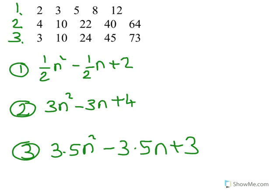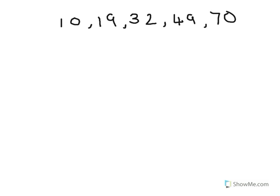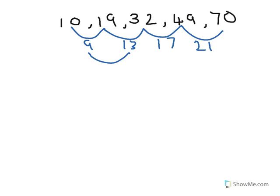Last one for you to have a go at. Let's look at this one together. From 10 to 19 we've added 9; 19 to 32, we've added 13; 32 to 49, we've added 17; 49 to 70, we've added 21. Let's look at the second difference — each of these second differences add 4, add 4, add 4, add 4.